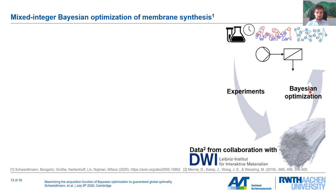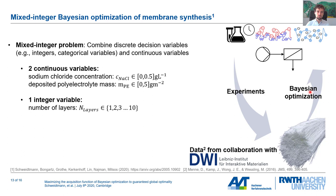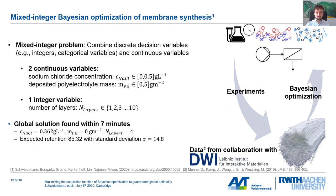Another advantage of branch and bound algorithms is that they handle mixed integer decisions easily. A mixed integer problem combines discrete or integer decisions with continuous ones. In one example, we try to design membranes to achieve very good retention. We have two continuous variables — basically concentrations — and one integer variable, the number of layers of the membranes. We can solve this problem within about seven CPU minutes, finding an expected retention with corresponding uncertainty that maximizes the expected retention.